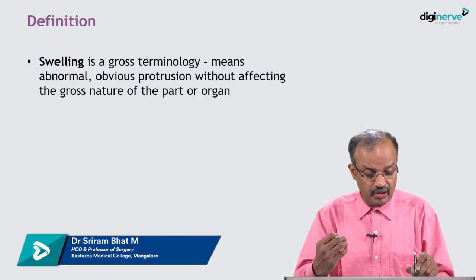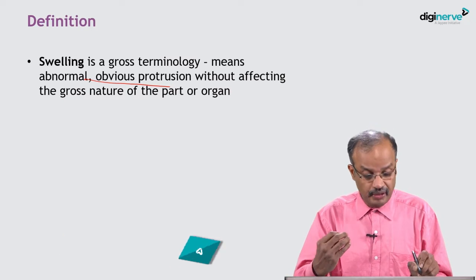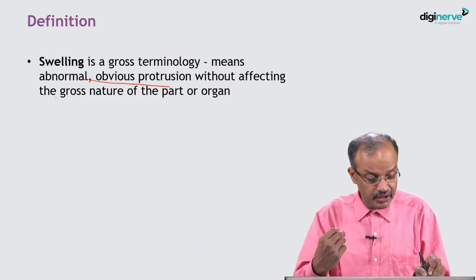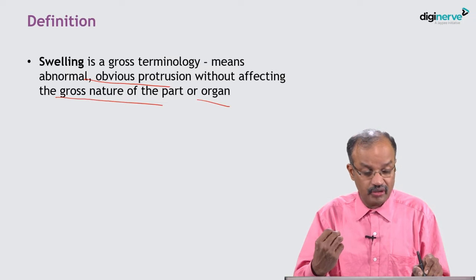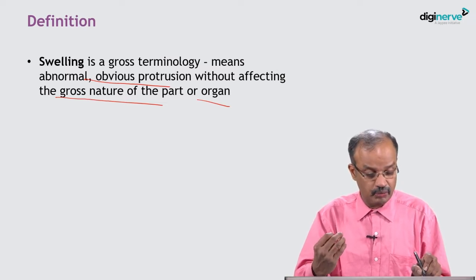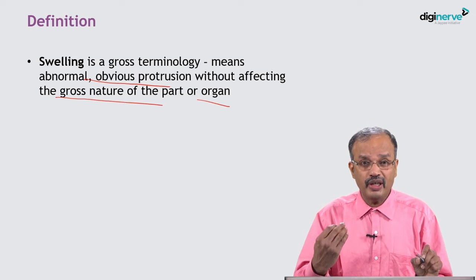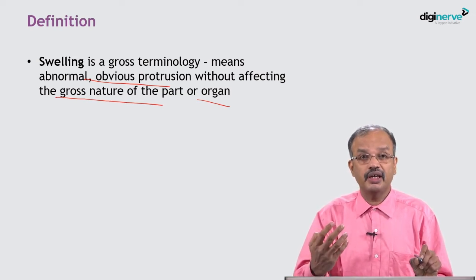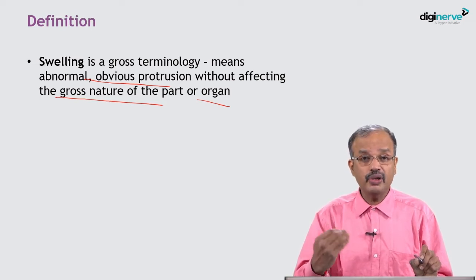Swelling is a gross terminology meaning abnormal obvious protrusion without affecting the gross nature of the part or organ. This is very important — without affecting the gross nature of the part or organ. Even though we commonly use swelling for surface lesions, in certain situations we use other terminology like lump or mass.